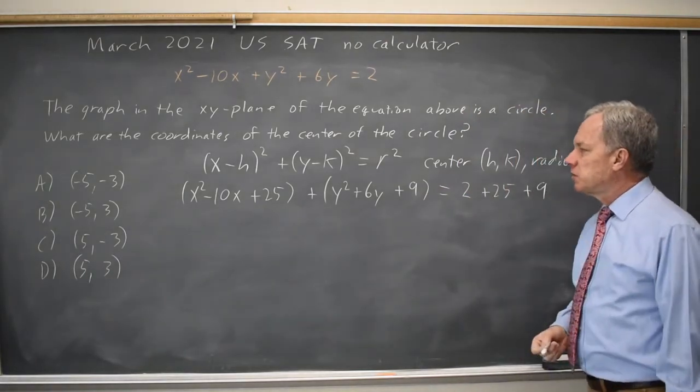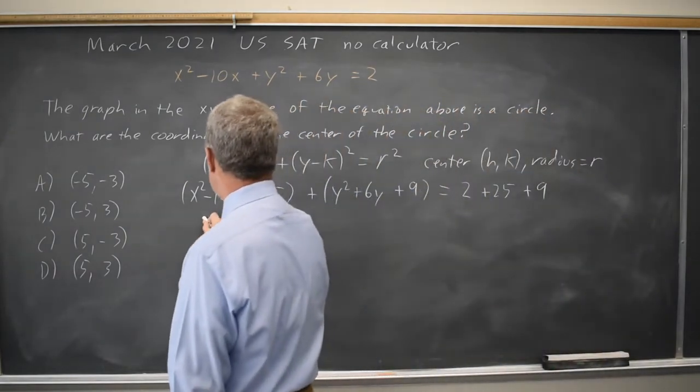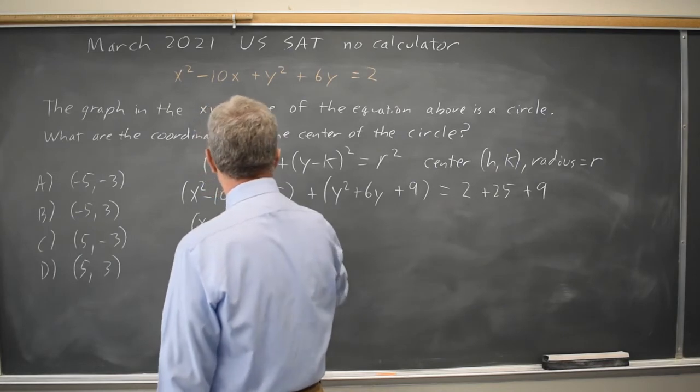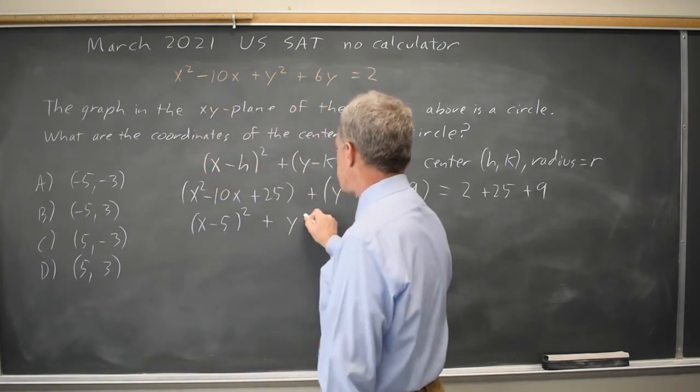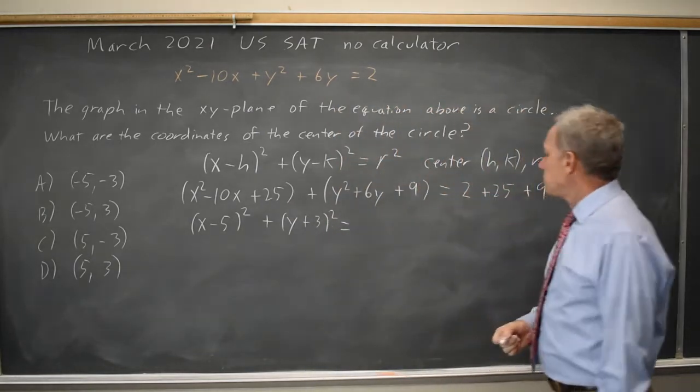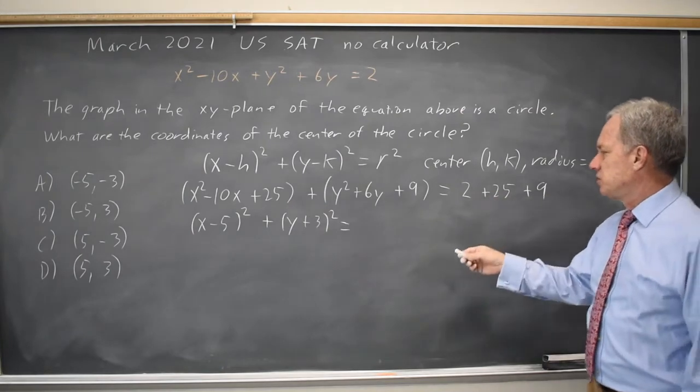By completing the square I've turned both of these into expressions that are perfect squares. The x expression is (x - 5)² and the y expression is (y + 3)² equals, it turns out we don't need this but we'll find it anyways, 25 + 9 is 34 plus 2 is 36.